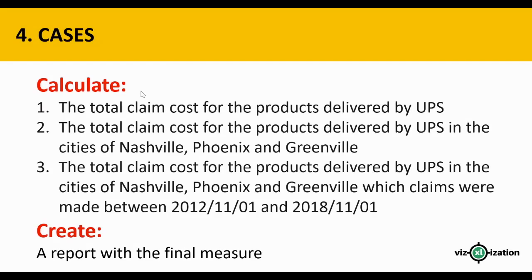Now for the practice cases, we're going to use everything we've learned. The first question: calculate the total claim cost for products delivered by UPS. The second: calculate the total claim cost for products delivered by UPS in the cities of Nashville, Phoenix, and Greenville. The third: filter claims made between November 2012 and November 2018. Finally, we'll create a report with a final measure.